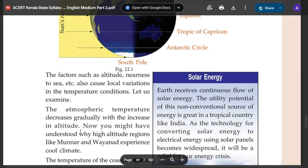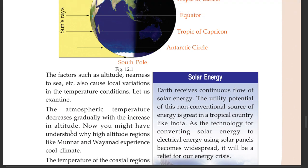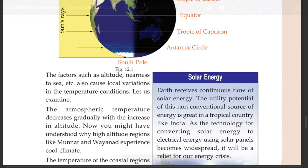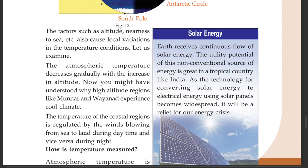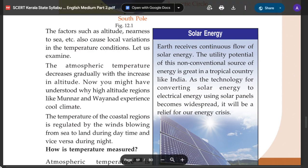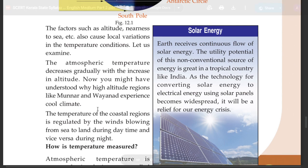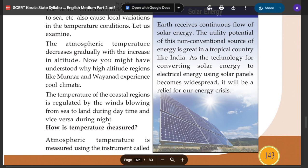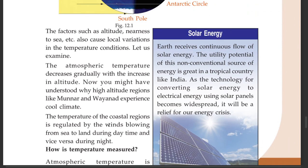Atmospheric temperature decreases gradually with the increase in altitude. Now you might have understood why high altitude regions like Munnar and Wayanad experience cool climate. You can understand that the temperature of the coastal regions is regulated by the winds blowing from sea to land during daytime and vice versa during night.